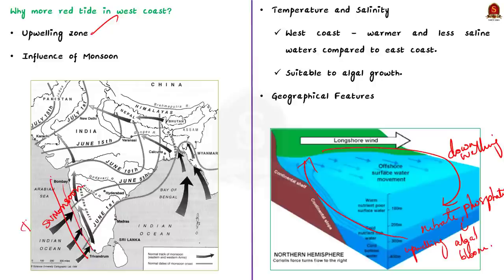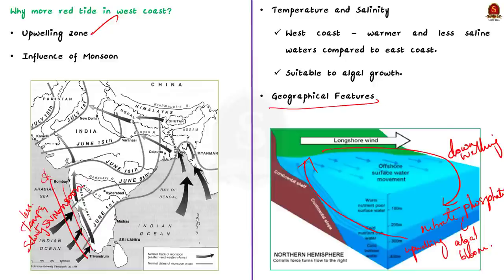Third reason is temperature and salinity. The west coast generally has warmer and less saline water compared to the east coast. This combination of temperature and salinity in the west coast waters is suitable for algal growth. Lastly, geographical features also influence algal bloom. The west coast has many coastal indentations and shelf areas than the east coast, which enhances the retention of nutrients and favors the development of algal blooms.